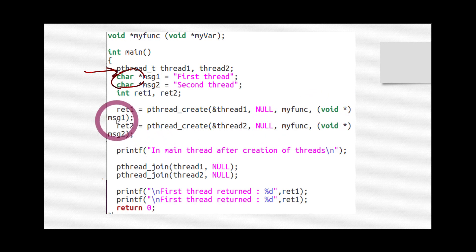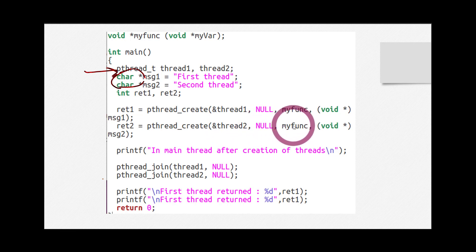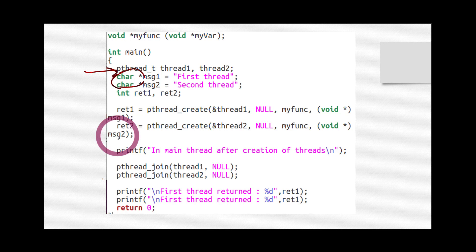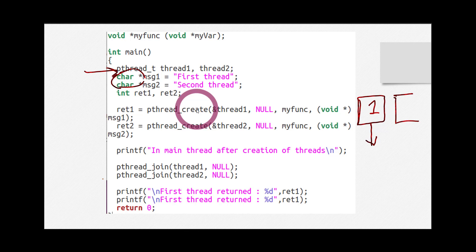In the same way, I created the second thread with pthread_create, passing the address of thread_two as the ID, null to keep it joinable, the function name, and this time type casting message_two to void pointer. The first line creates thread one and starts its execution. The second line creates another thread which starts its execution in parallel at the same time. Both threads will be running simultaneously.